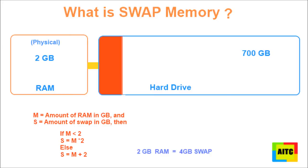Swap memory is what your computer uses when it runs out of RAM. Swap is just a reserved amount of memory on your hard drive. If you have 2 GB of RAM and your machine needs to store 2.5 GB of stuff in RAM, 500 MB will get put into swap on your hard disk.